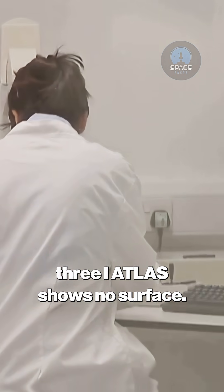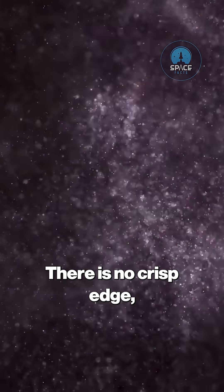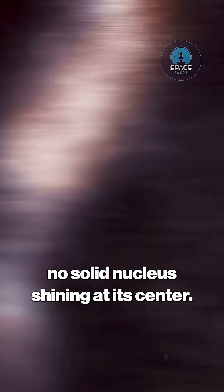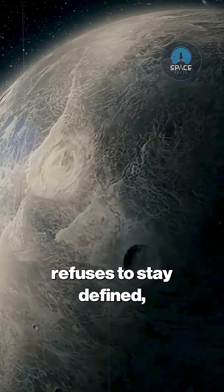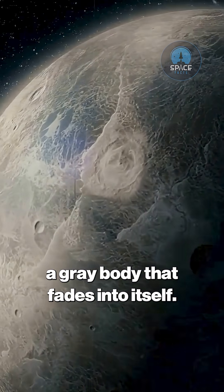In the image, 3I ATLAS shows no surface. There is no crisp edge, no solid nucleus shining at its center. What we see instead is an outline that refuses to stay defined, a gray body that fades into itself.